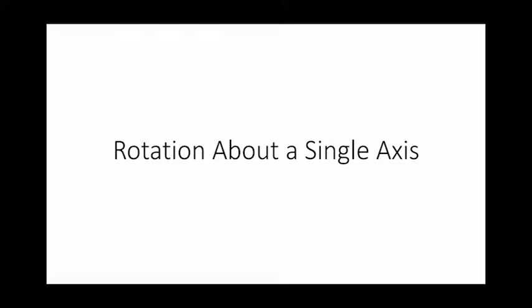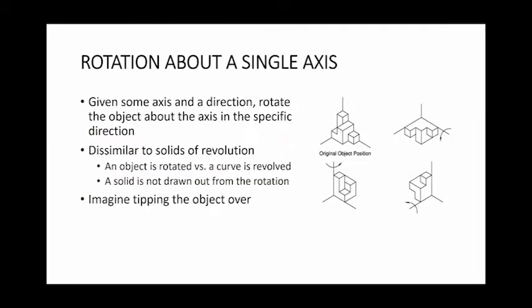Let's jump right in and see what a problem looks like when we're dealing with rotations about a single axis. Initially what we're given is an original object position that's usually centered at the origin. Then we're also given some axis and a direction around which we rotate on that axis. From that we can then essentially tip over the object or push it across that axis and that gives us our object of rotation.